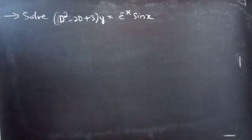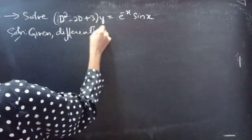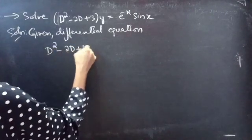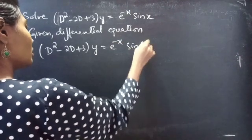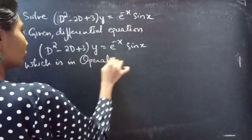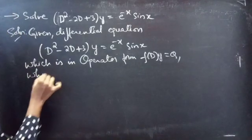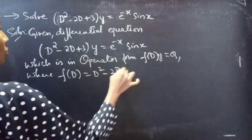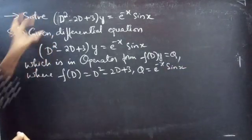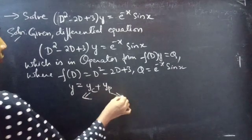Now coming to the problem. The given differential equation d² - 2d + 3)y = e^(-x)·sin(x) is in operator form f(D)·y = Q, where f(D) = d² - 2d + 3 and Q = e^(-x)·sin(x). We need to find the general solution y = yc + yp, where yc is the complementary function and yp is the particular integral.